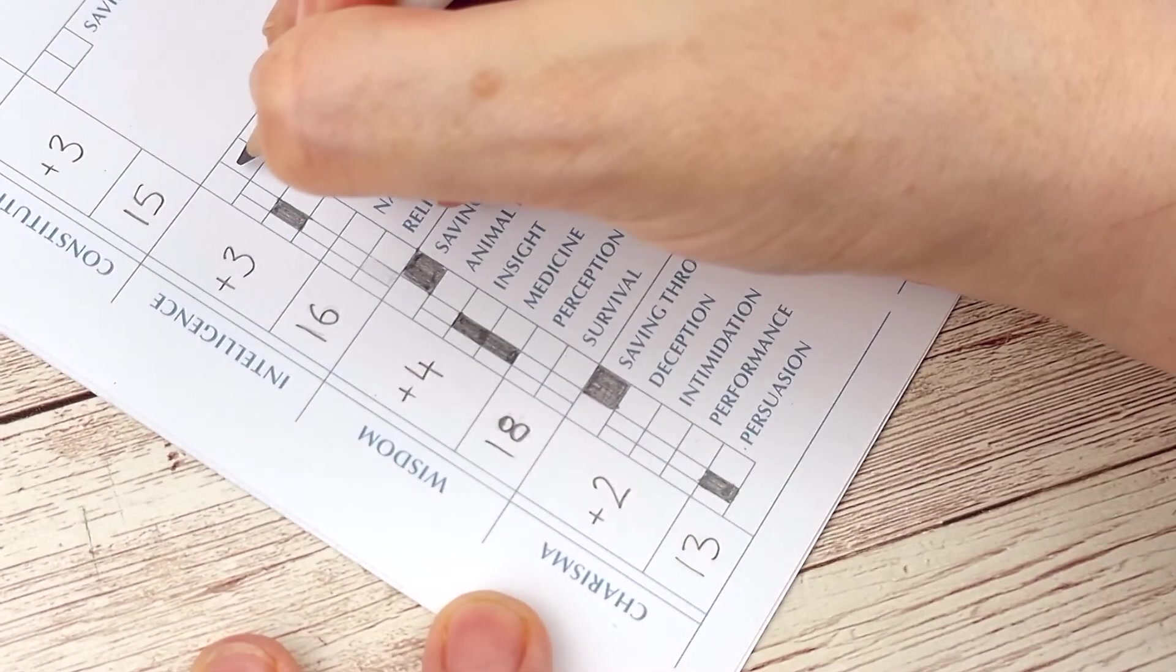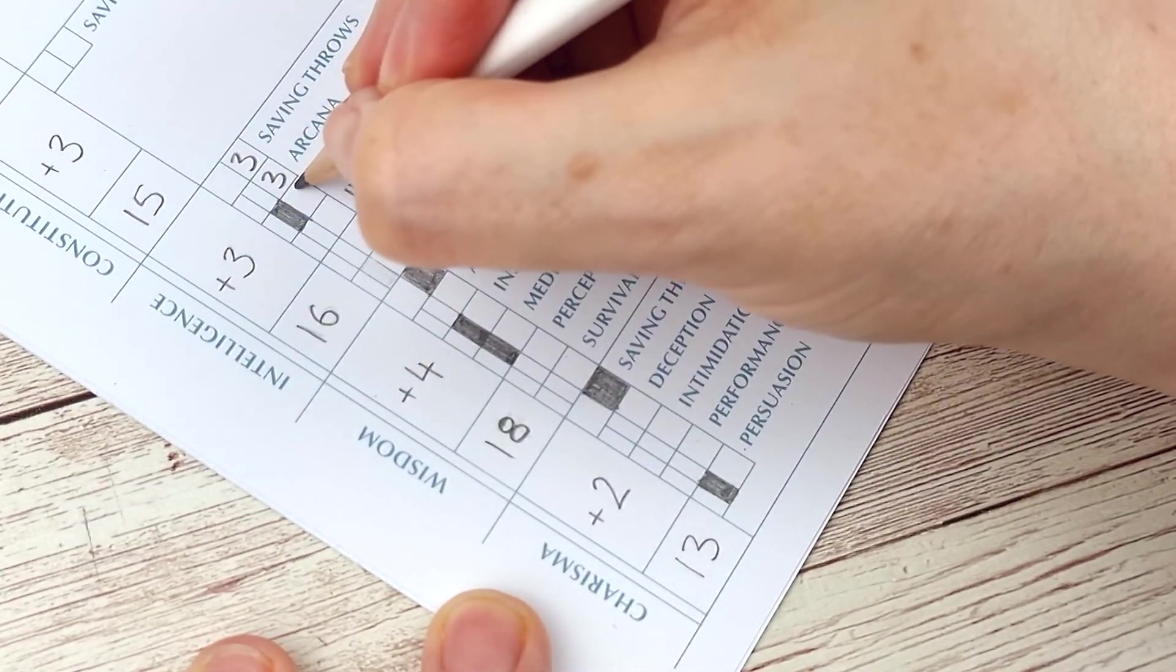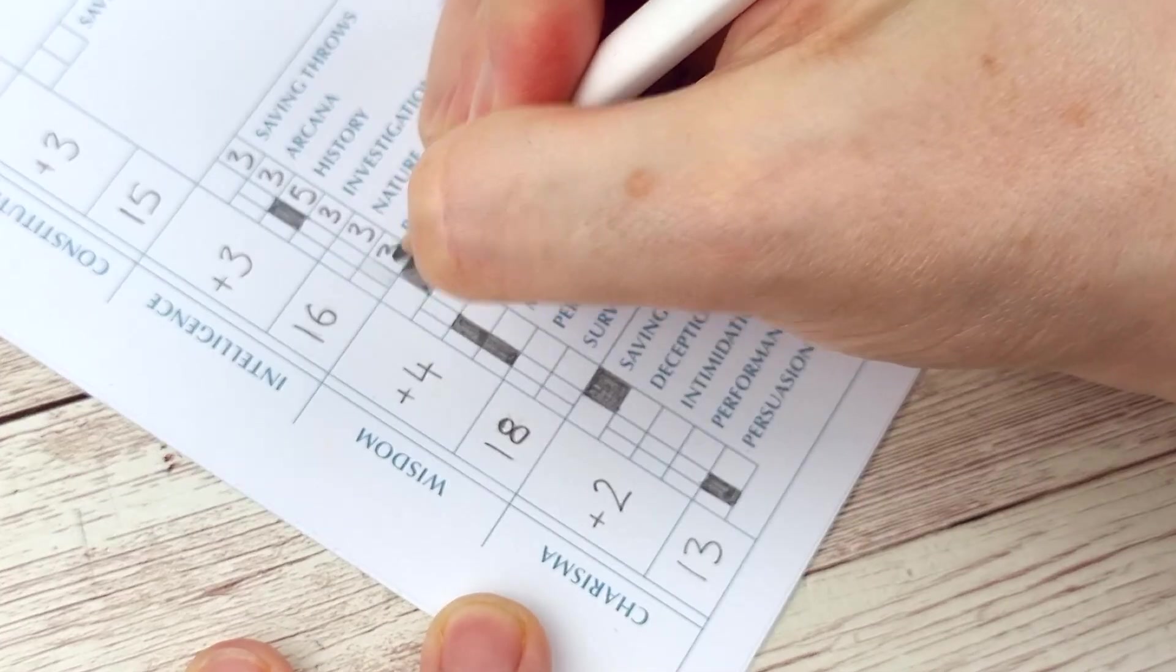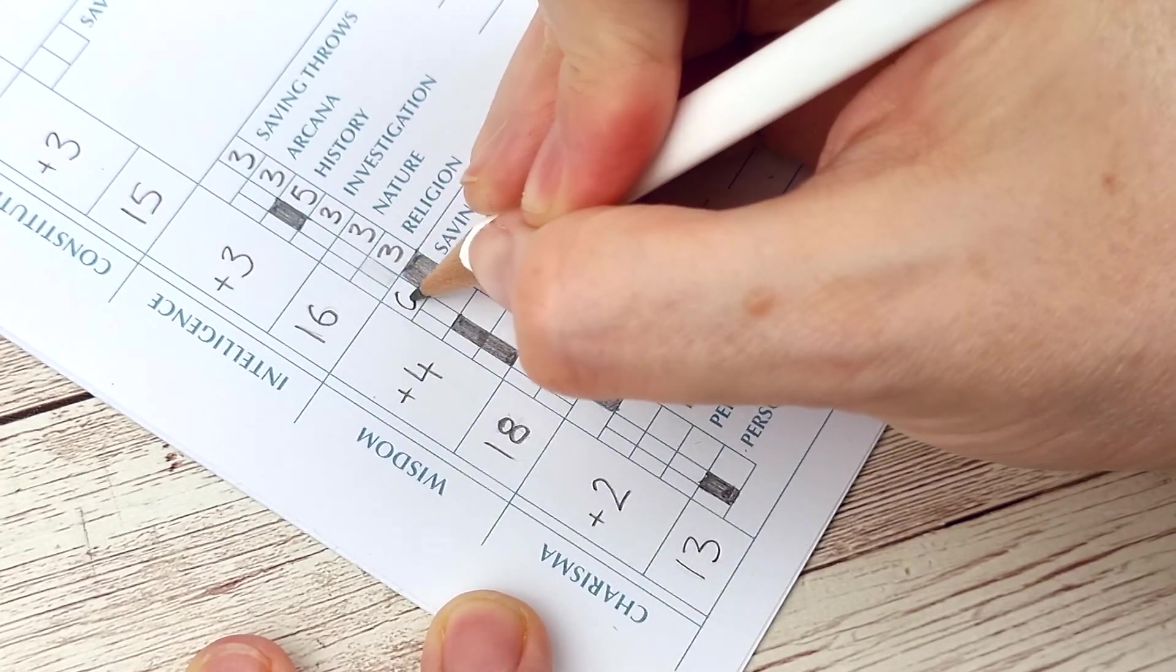In this example you can see that the intelligence skill bonuses are all three because that's the intelligence modifier but I am proficient in history and so I add two to that which gives me five for history. Do this for all the skills and now they're ready to go.